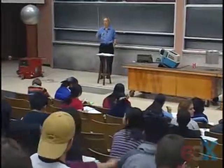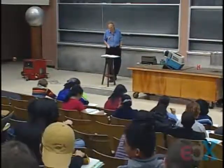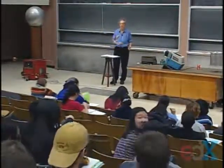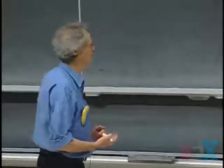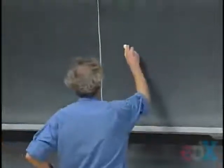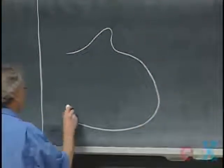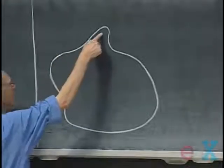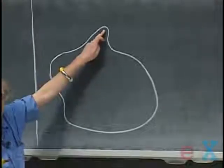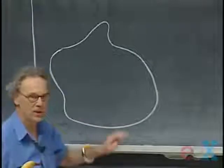Last time I mentioned that charge resides at the surface of solid conductors, but it is not uniformly distributed — unless it happens to be a sphere. I want to pursue that today. If I had a solid conductor with this shape, I'm going to convince you that the surface charge density will be higher here where the curvature is stronger.